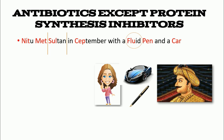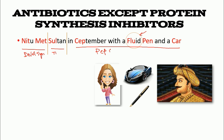All the red-colored highlighted regions represent the antibiotics we are going to talk about — remember, we're looking at antibiotics except protein synthesis inhibitors. There are three separate lines: Neetu met, then Sultan, then the rest — with 'fluid' in a circle. The first two red regions are DNA synthesis inhibitors, the second part links to tetrahydrofolate synthesis, and the rest deal with peptidoglycan synthesis inhibition, with gyrase inhibition in the middle.